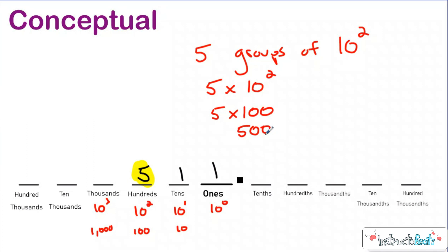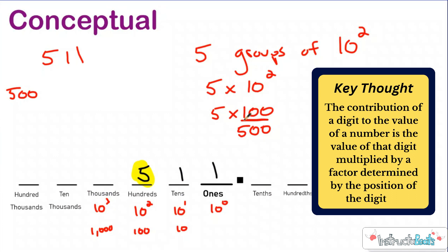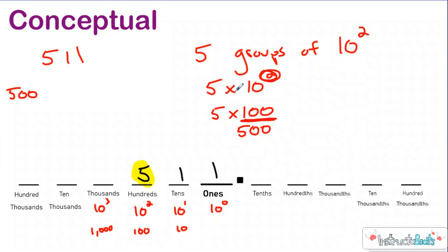Going back to that really precise mathcabulary: the contribution of a digit to the value of a number — so I'm going to write 511 up here — the contribution to the overall value that this 5 is providing is 500. The digit five is multiplied by a factor determined by the position of the digit. In this case, it's multiplied by 100 because it is in the second position to the left of the ones place.